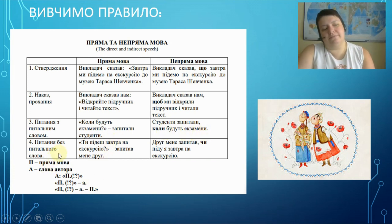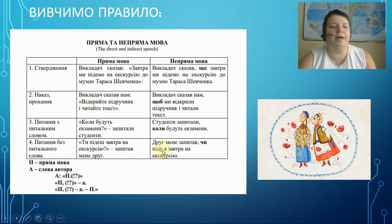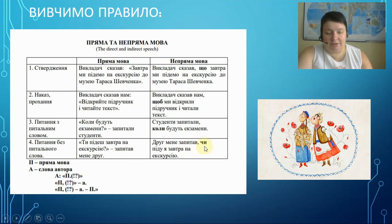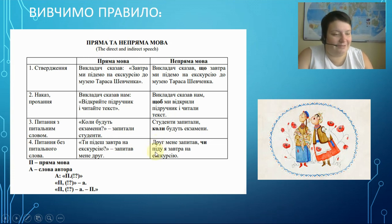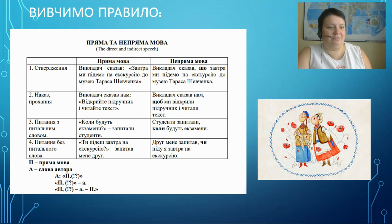Questions without a question word. Direct speech: 'Ти підеш завтра на екскурсію?' — запитав мене друг. 'Will you go to the excursion tomorrow?' my friend asked me. Indirect speech: my friend asked me if I would go to the excursion tomorrow. Here we have ЧИ — it means 'if' in this case. We don't change the tense; we just change the pronoun according to who we're asking. The word order isn't changed either.